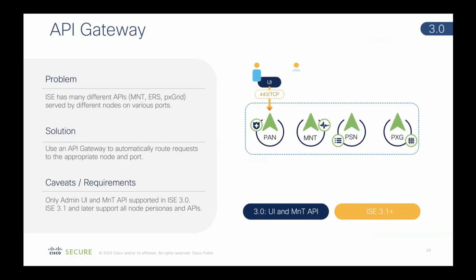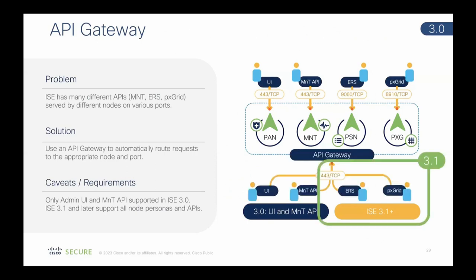An API gateway was added in ISE 3.0, and in 3.1 it was made available for PX Grid. Rather than worrying about all the different nodes, ports, and services, the API gateway lets you forget about the port and it magically redirects to the right service. Note that ERS APIs and PX Grid support via API gateway only came in 3.1. My examples use port 8910 for PX Grid, but if you're on 3.1 and later you don't need to include that.